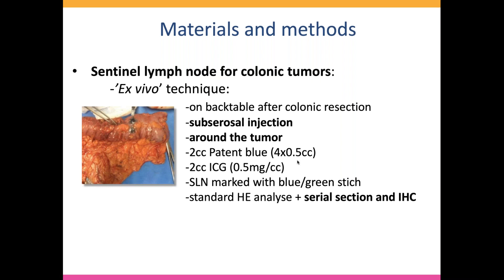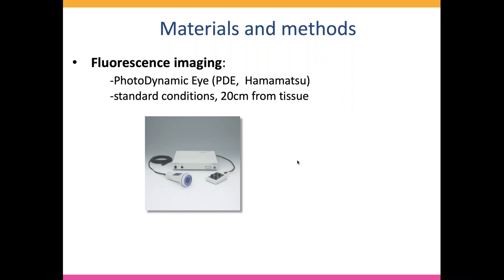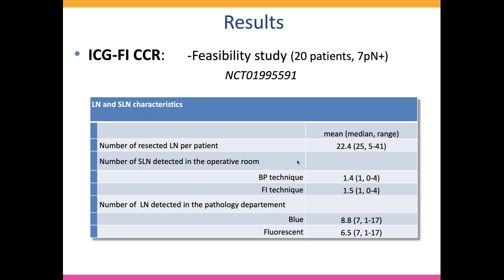We then look with the camera for the fluorescent sentinel lymph node, and the nodes are marked with a blue or green stitch depending on the technique used. Most of the time, we found the same lymph node. We use standard hematoxylin eosin staining for the analysis, but also using serial section. For academic reasons, we also looked at the effect of immunohistochemistry.